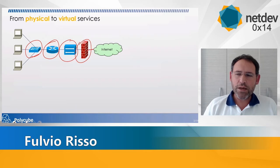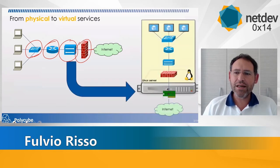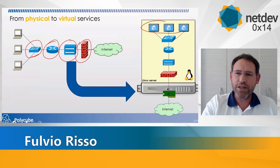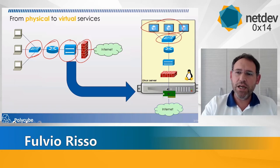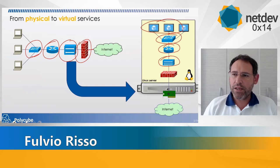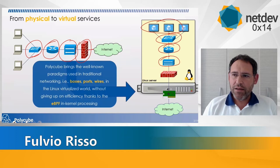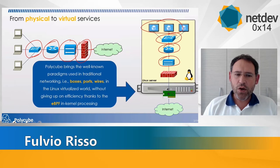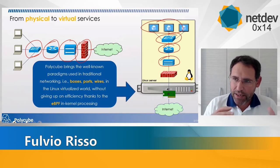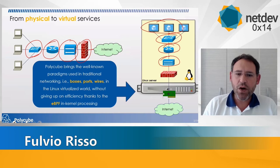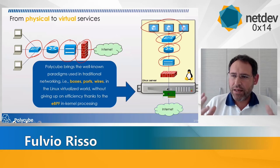What we would like to do is to try to recreate exactly the same model, where physical machines are now virtual machines, and where the virtual machines can be connected to a bridge, then a router, and a NAT, and so on. Our software framework, Polycube, brings the well-known paradigm used in the traditional world — boxes, ports, and links that connect between ports and boxes — into the Linux virtualized world, in order to recreate the same familiar environment we're used to in the physical world.